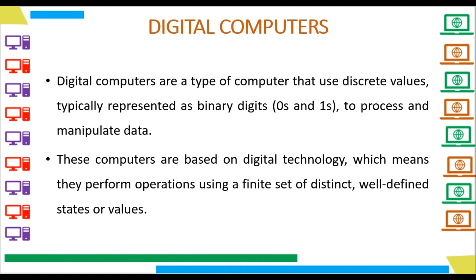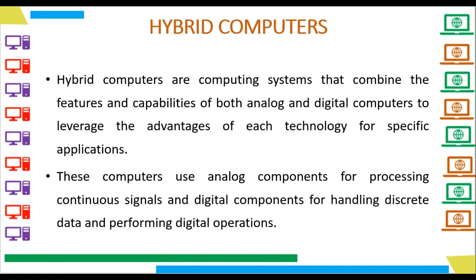Next is digital computers. Digital computers are a type of computer that use discrete values, typically represented as binary digits — zeros and ones — to process and manipulate data. These computers are based on digital technology, which means they perform operations using a finite set of distinct, well-defined states or values. Next is hybrid computers. Hybrid computers are computing systems that combine the features and capabilities of both analog and digital computers to leverage the advantages of each technology for specific applications. They use analog components for processing continuous signals and digital components for handling discrete data and performing digital operations.